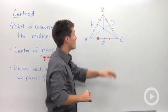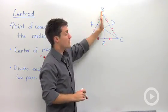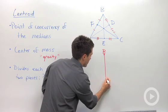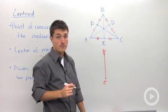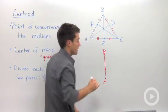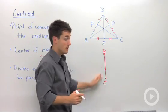Getting back to the proportional part, if I looked at this median BE, so I'm going to redraw it down below. I'm going to have B up here, and I'm going to have E down there. The median is right about here.